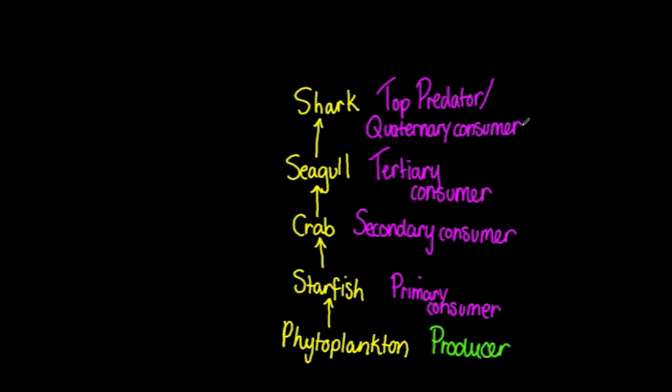Now it's important to note that the term 'consumer' should be used instead of the terms 'herbivore' or 'carnivore,' which are used only to describe diet and should not be used to describe the trophic level.